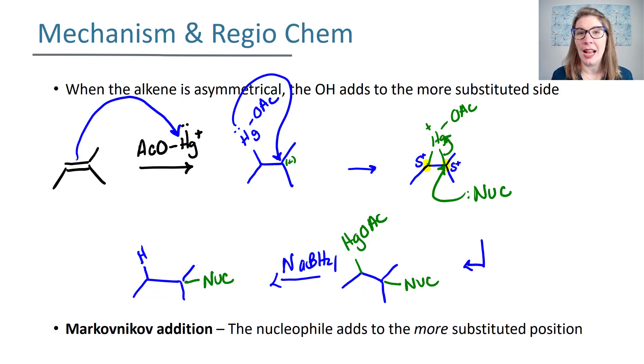If you're in my class, I have a general rule that if I don't show you the complete mechanism, it means that I'm not going to ask that mechanism of you on the test. So I'm showing you the mechanism here so that you can understand the regiochemistry as to why the OH adds to the more substituted side. But this is not a mechanism I expect you to reproduce, especially because sodium borohydride, we're just waving our reduction wand, and we're putting a hydrogen in for the HgOAc.